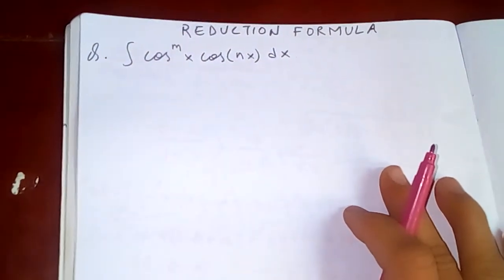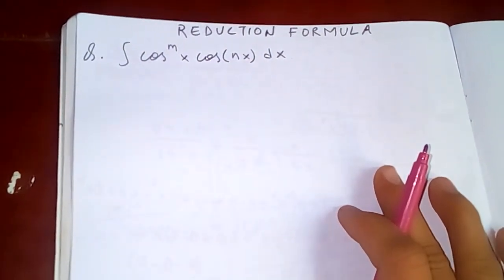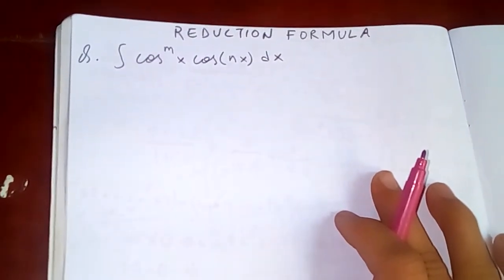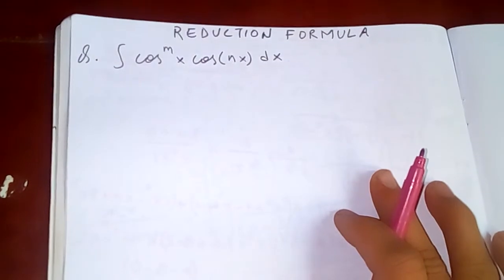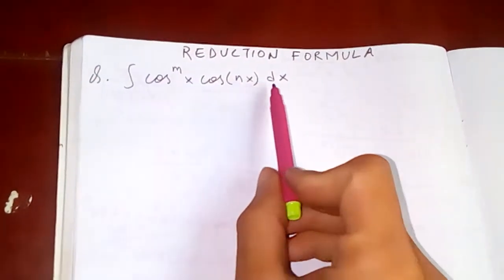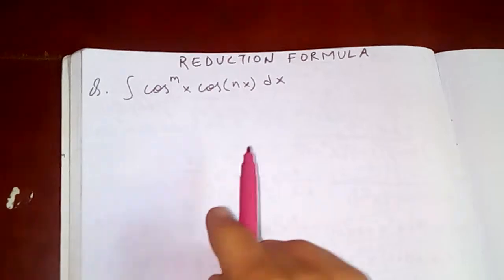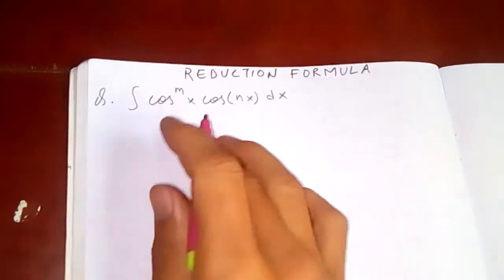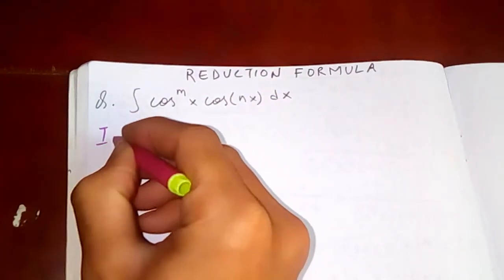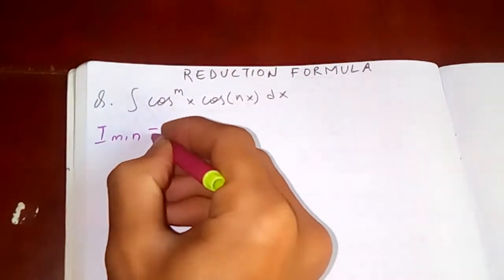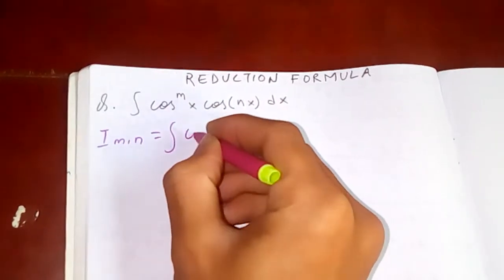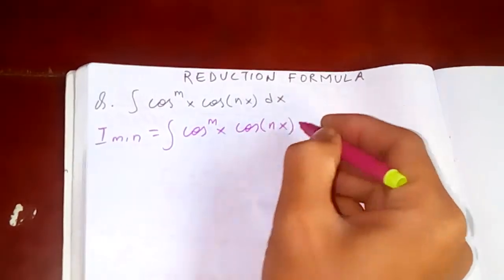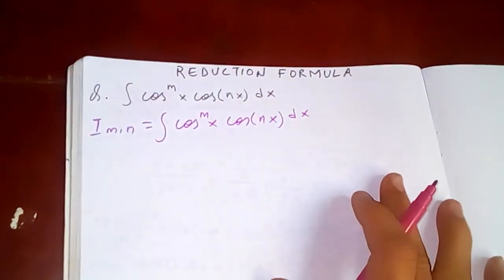Thanks for watching my video today. Let's discuss our reduction formula here: integration of cos^m(x) · cos(nx) dx. Our integral involves m and n, so let's call this integral I_{m,n}. So I_{m,n} is the integration of cos^m(x) · cos(nx) dx.